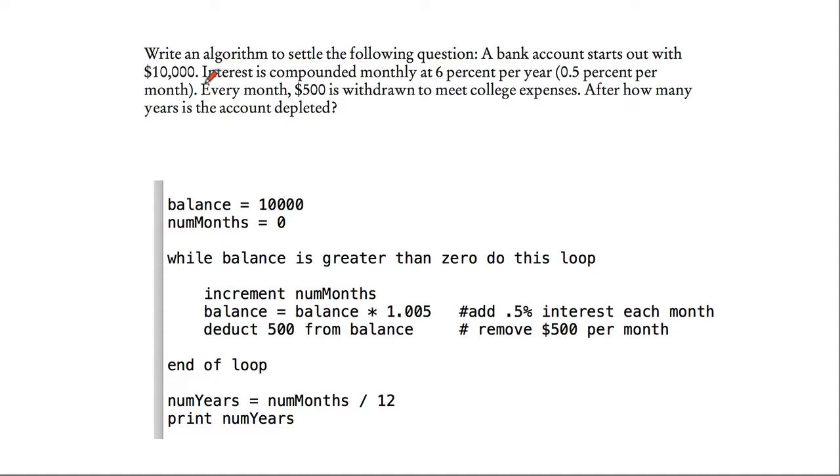And one of the things you'll notice here is interest is compounded monthly at 0.5% per month. So 0.5% per month. And since it's compounded monthly, we have to do this monthly, not yearly. Some of you attempted to do it per year.